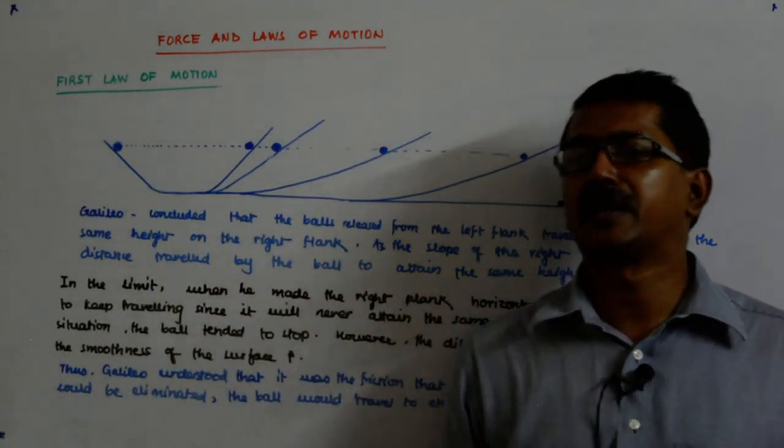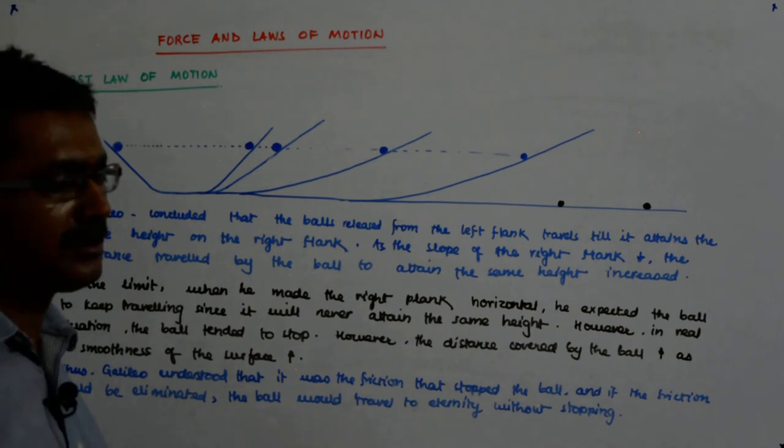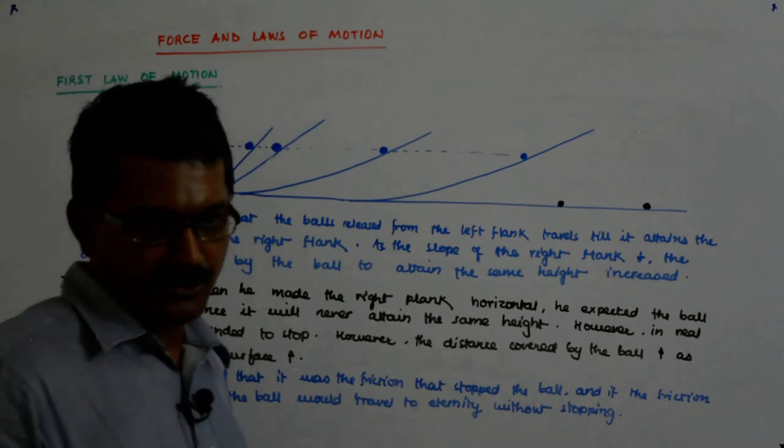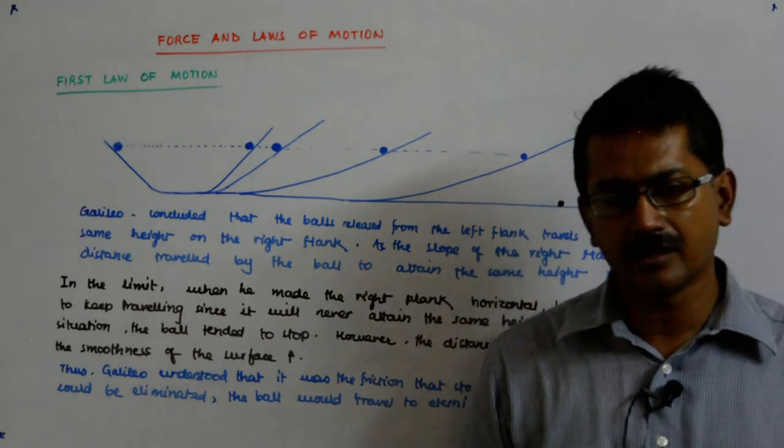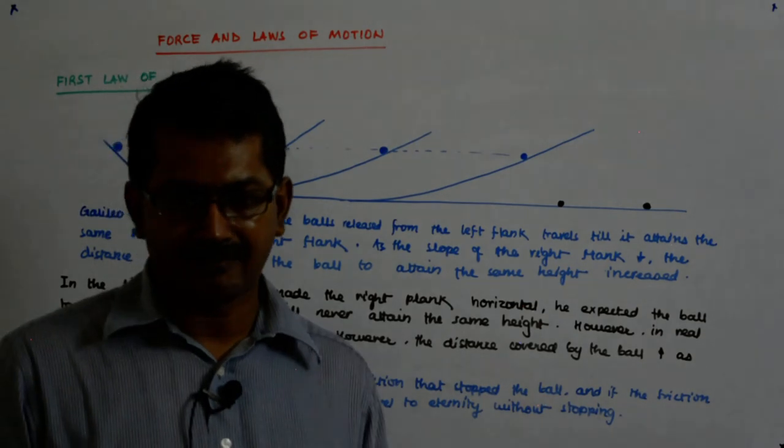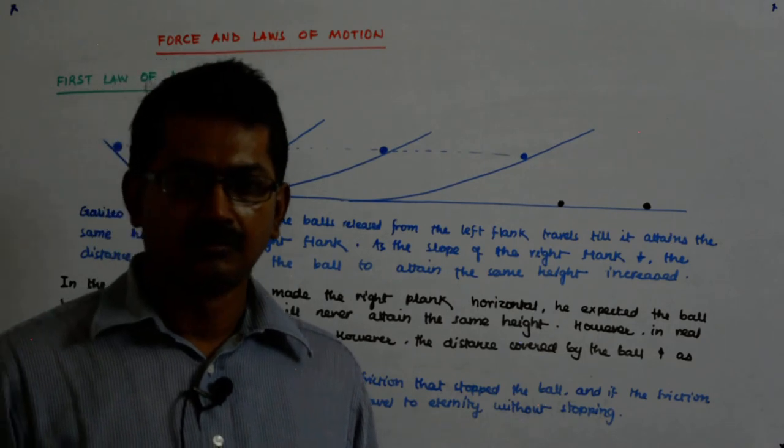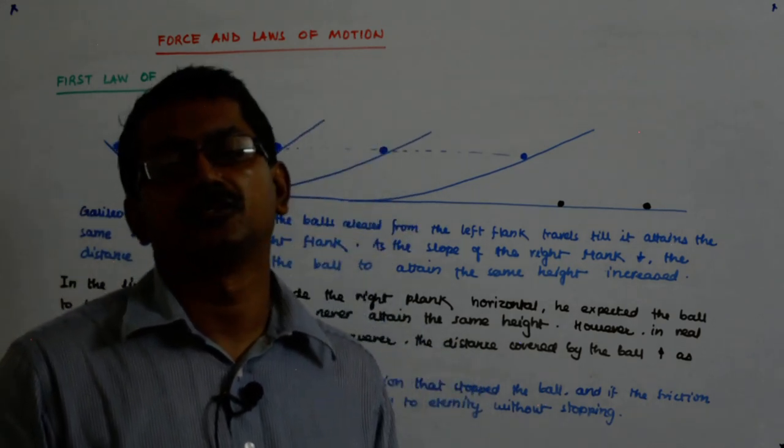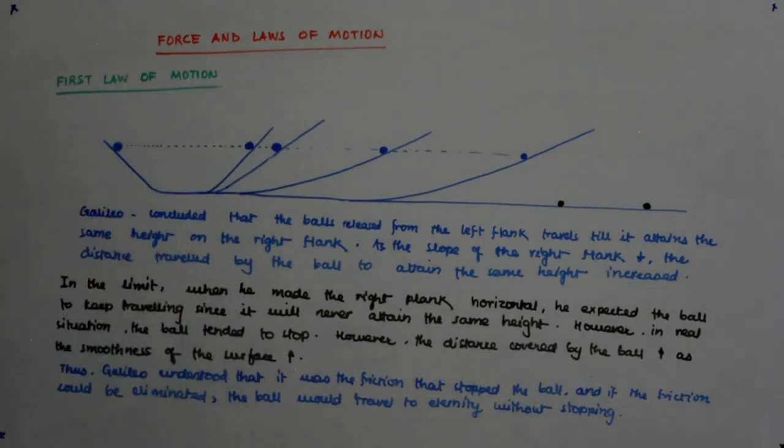Now, it was this observation and this experiment that laid such a fundamental background for Newton to build upon that he gave his first law based on and after understanding this. And what does it say? It says that an object at rest or in a state of uniform motion will continue to do so unless acted upon by an unbalanced force. That is the Newton's first law of motion.